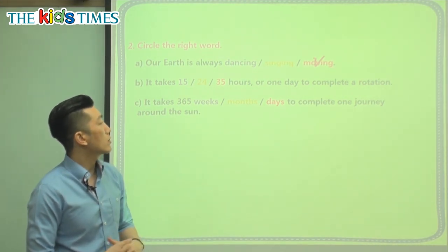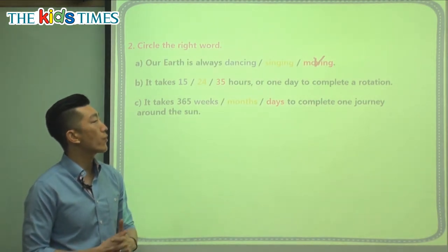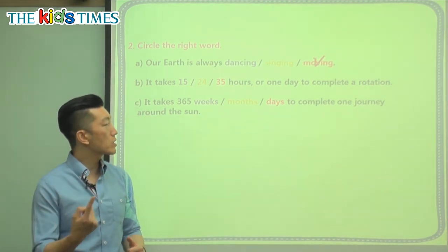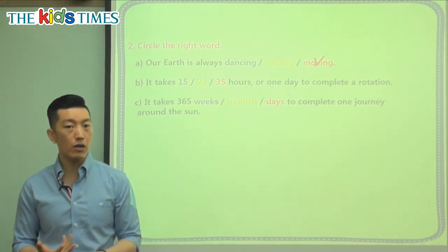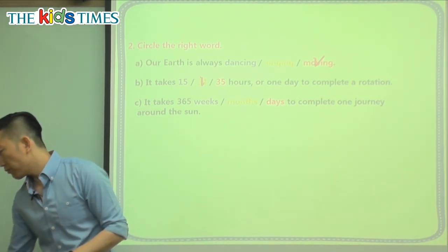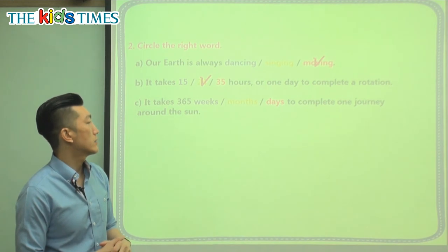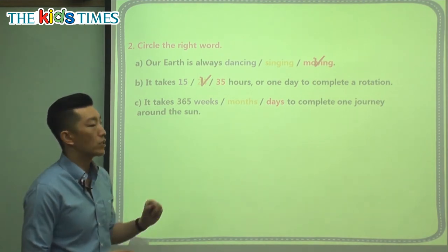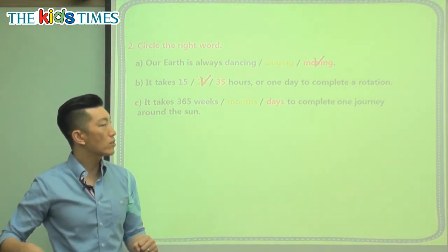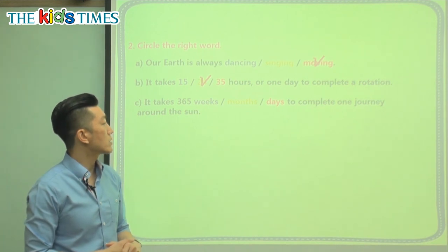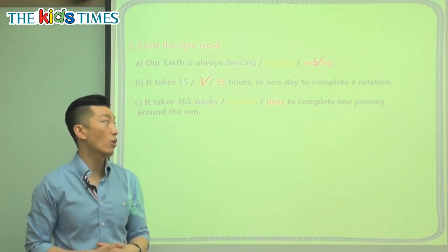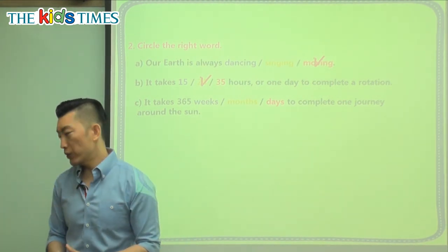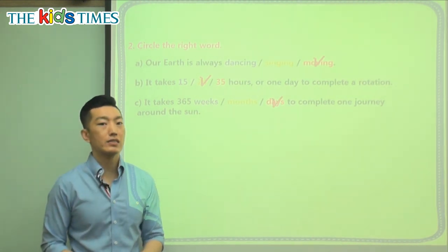It takes 15 hours, 24 hours, 35 hours, or one day to complete a rotation. How many hours are there in a day? We said 24 hours — that's one day, and it causes day and night. It takes 365 weeks, months, or days to complete one journey around the Sun. Does it take 365 weeks? That's a long time. 365 months? Even longer. Or 365 days? We know that in one year there are 365 days.